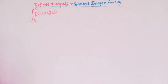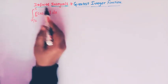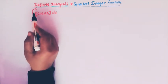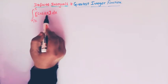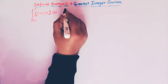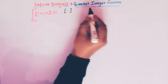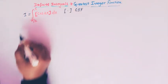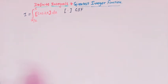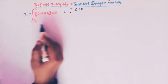Hello viewers, in today's class we are going to solve one important definite integral involving the greatest integer function. Here we have to evaluate this integral from π/2 to π, where the greatest integer function is applied to cos2x. Let us call this integral as I.